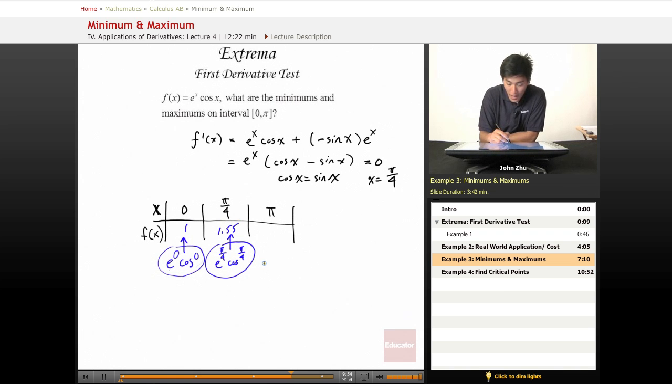And at pi, e to the pi cosine of pi, we get negative 23.14. So now we have these points, and we know that there's no change in directions or surprises in between them. So these are the either max or mins within the interval.